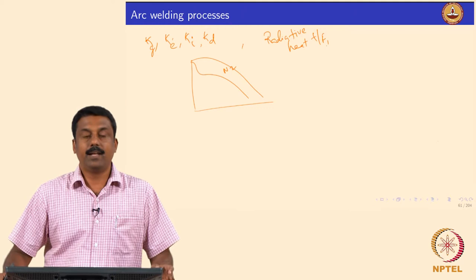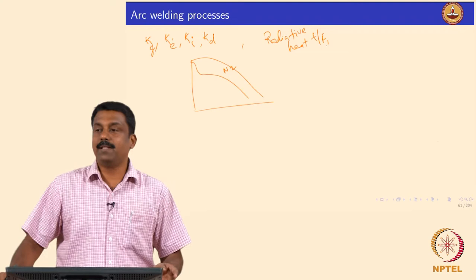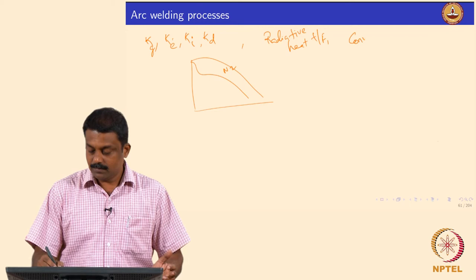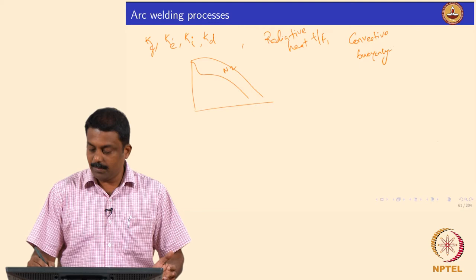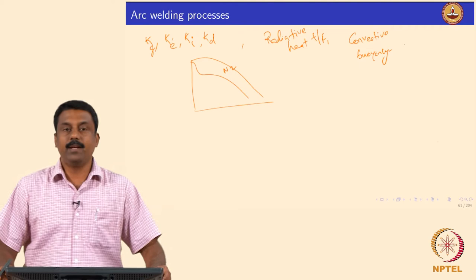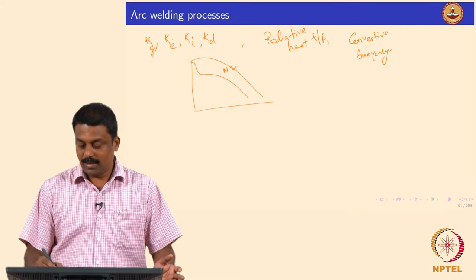Helium is known to transfer heat much more effectively — similar to hydrogen — because convection is predominant. We looked at two major effects that can cause convective heat transfer: buoyancy flow and plasma jet formation. Buoyancy flow happens because of density differences — at the center of the arc the temperature is high, gas density reduces significantly, leading to a density-driven flow known as buoyancy flow.